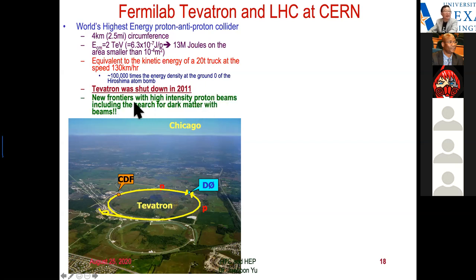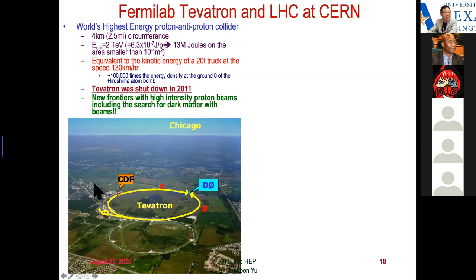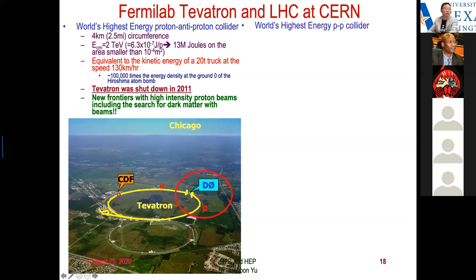Now there is a new frontier with high-intensity proton beams. Fermilab is about 40 miles west of Chicago. They're now using the main injector to shoot high-intensity proton beams in two directions — to the MINERvA experiment and searching for dark matter with the beam — and we're leading the dark matter effort at Fermilab using that beam.